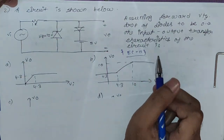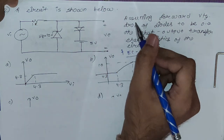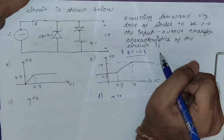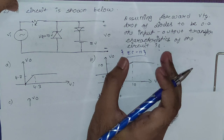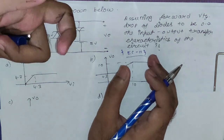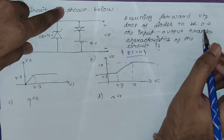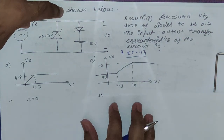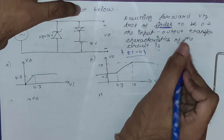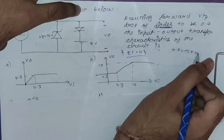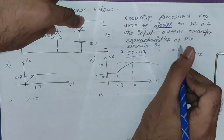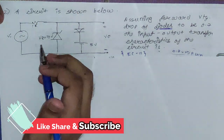Now the second sum, from EC 2011. We are given a circuit and the condition states: assuming forward voltage drop of diodes to be 0.7 V, find the input-output transfer characteristics. The difference here is that the diodes are not ideal — they have a 0.7 V drop when forward biased. This condition applies to both the PN junction diode and the Zener diode when forward biased.